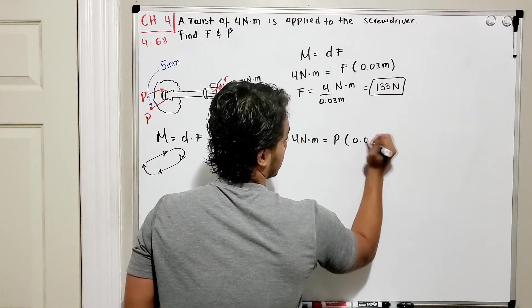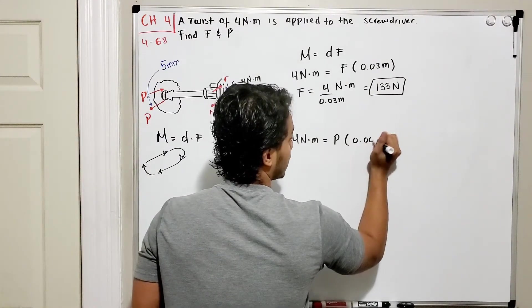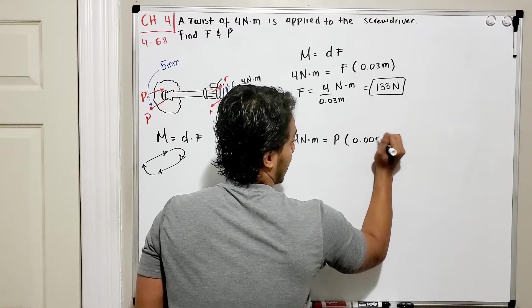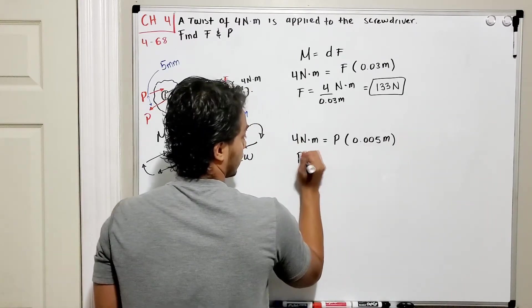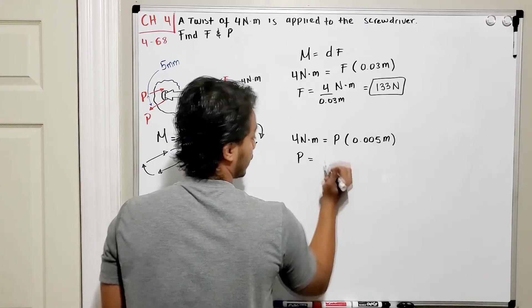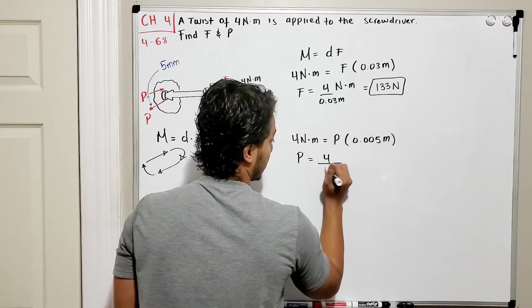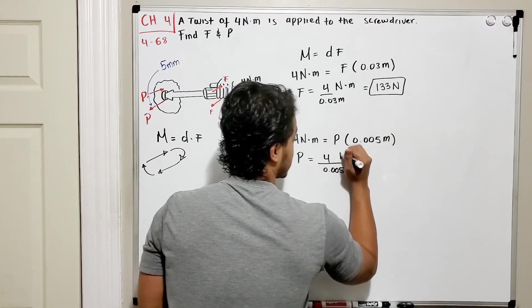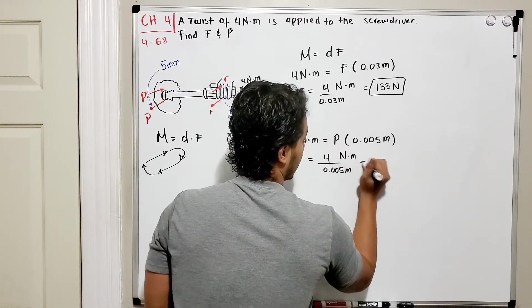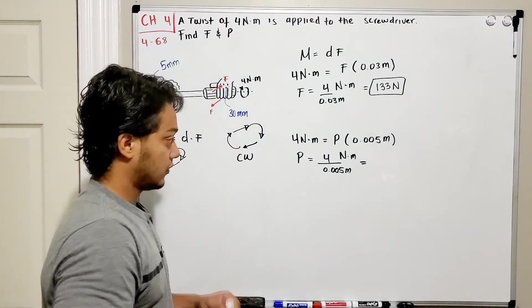Now if we solve for P, we'll find out that P is going to be 4 divided by 0.005 meters. The top is newton-meters, and let's check how much that is.